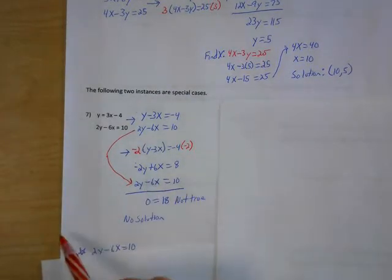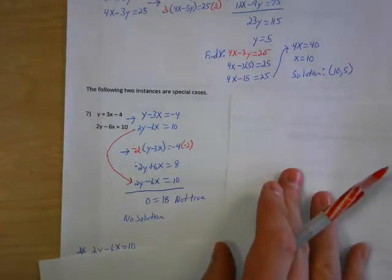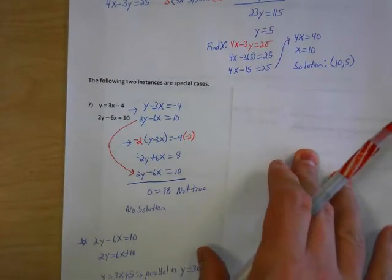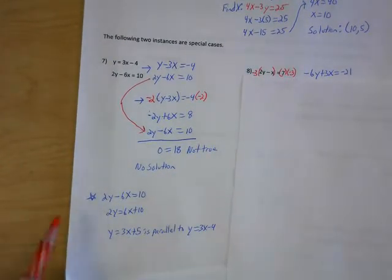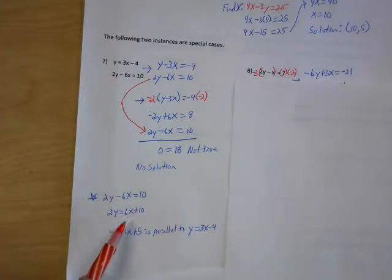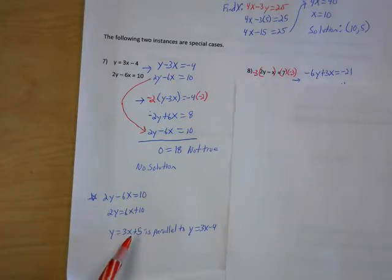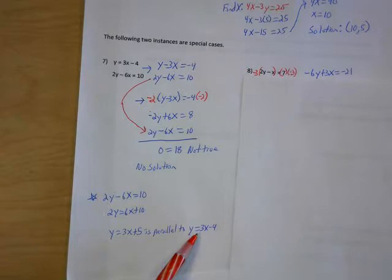Graphically, these are two lines that never intersect. Converting to y equals mx plus b: 2y minus 6x equals 10 becomes y equals 3x plus 5. Comparing that to y equals 3x minus 4, we can see they're parallel lines — same slope but different y-intercepts — so they never intersect.